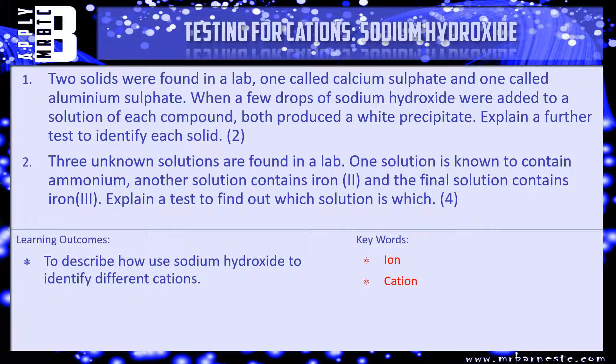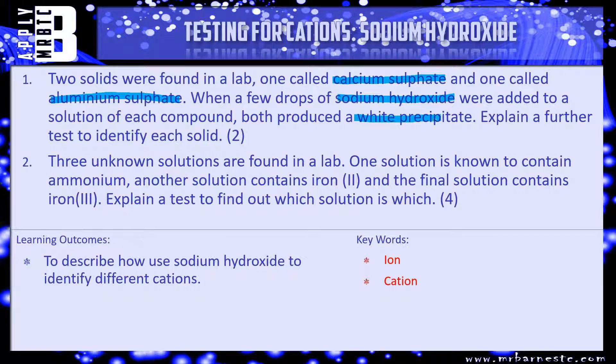Okay, let's see what the examiner could ask you. I've got two questions for you. Number one: two solids were found in a lab, one called calcium sulfate and one called aluminium sulfate. When a few drops of sodium hydroxide were added to a solution of each compound, both produced a white precipitate. Explain a further test to identify each solid. So it's worth two marks. You get one mark for saying what you do and then one mark for saying what you'll see, how you'll know which one is which.